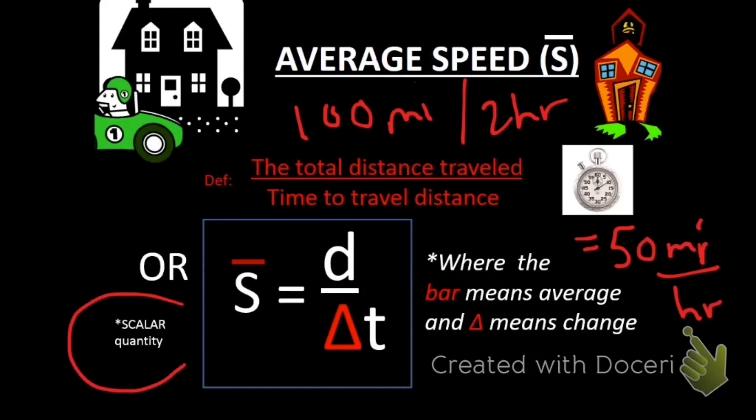I mentioned that this is a scalar quantity, which means that average speed also does not indicate direction. We just know distance and time, nothing about direction. We'll get into that later.